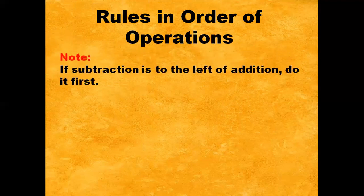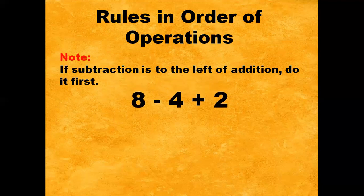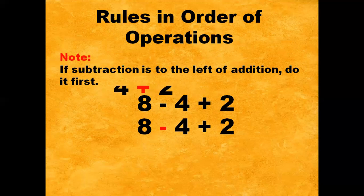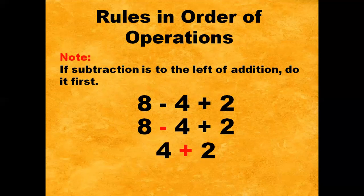Next, if subtraction is to the left of addition, do it first. For example, 8 minus 4 plus 2. First, we subtract 8 and 4: 8 minus 4 gives us 4, then plus 2. After subtraction, we add 4 plus 2. The answer is 6.